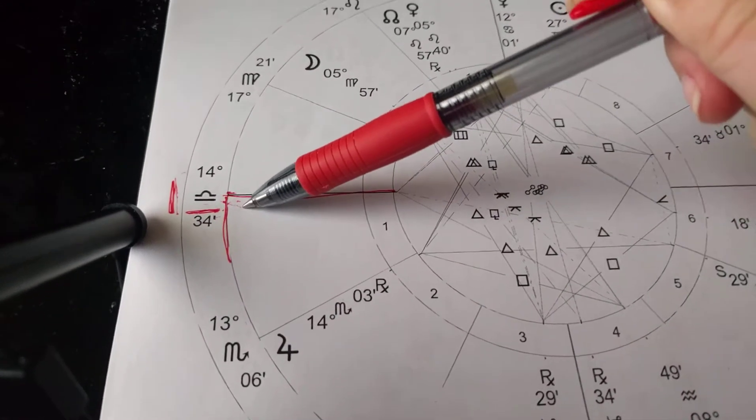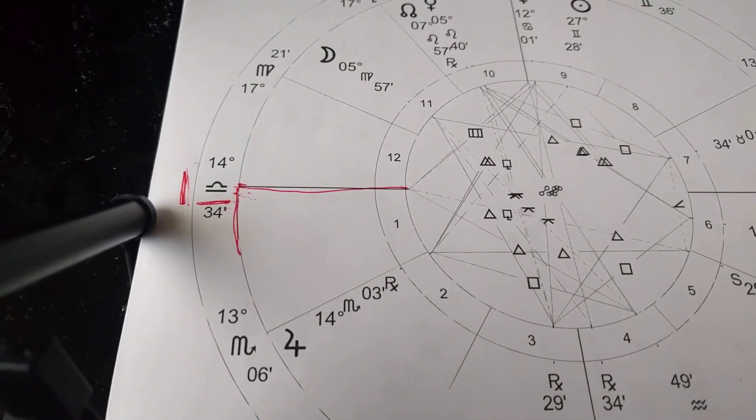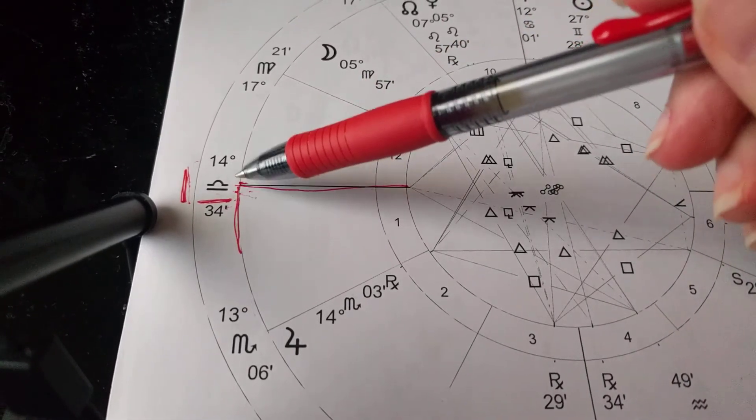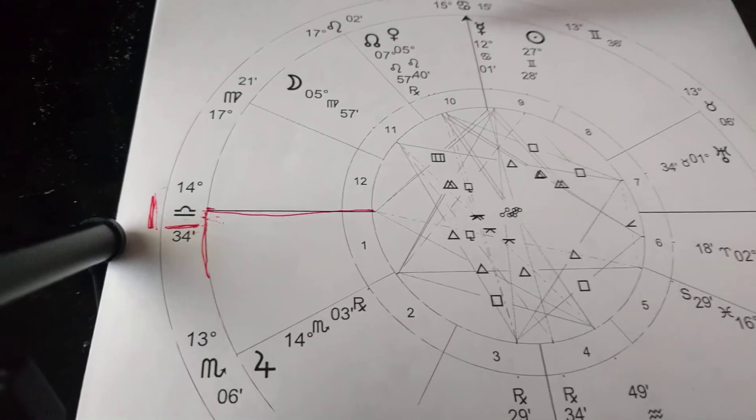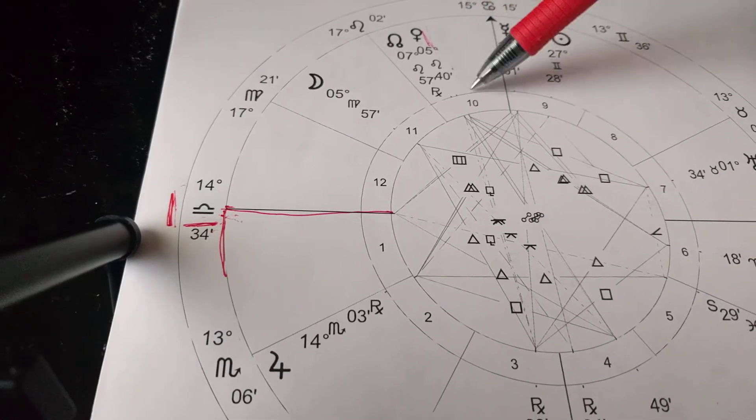So to get more information about how you come across with this Libra rising, you'll look to the chart ruler, which is Venus. And Venus will tell you how you present these Libran qualities even more. So in this chart, Libra is right here. She is at Leo in the 10th house.